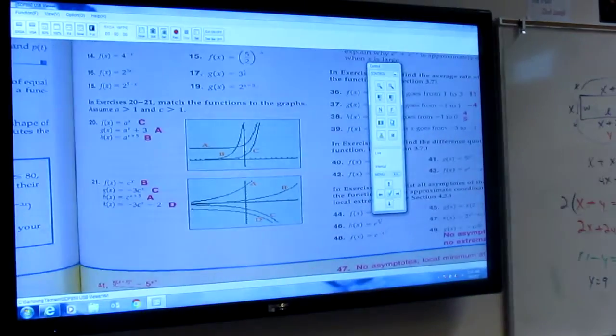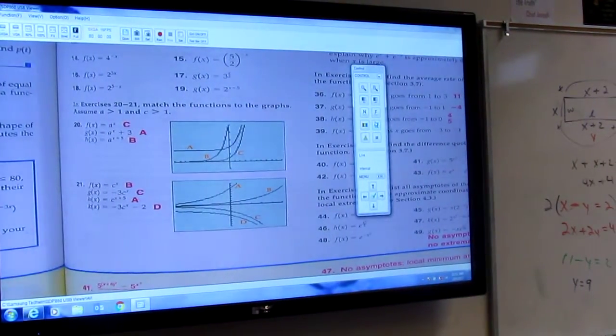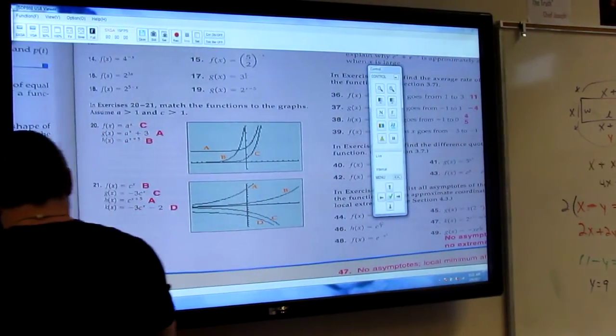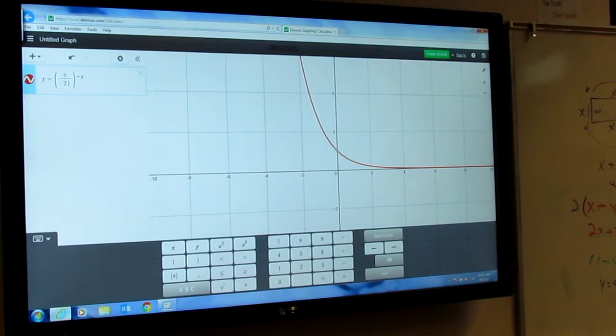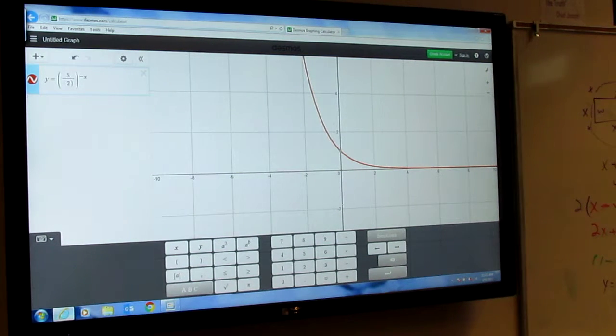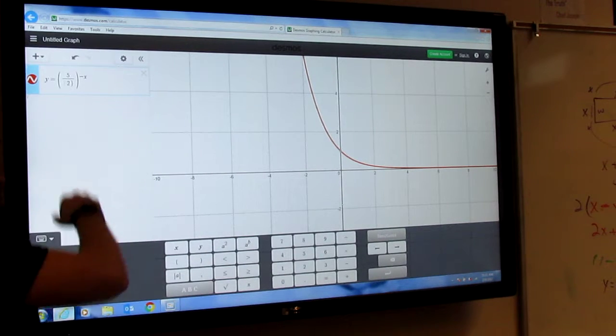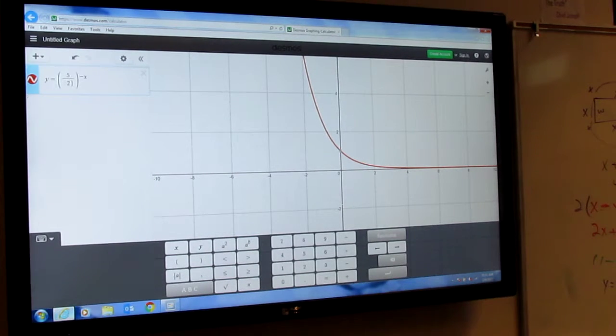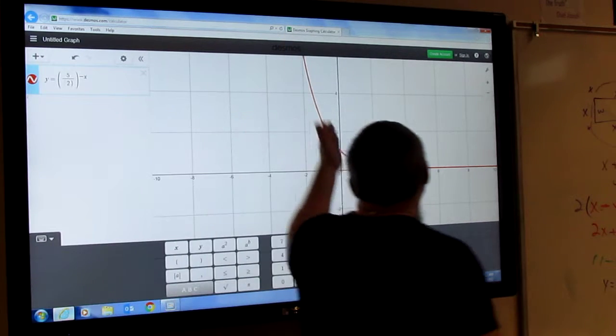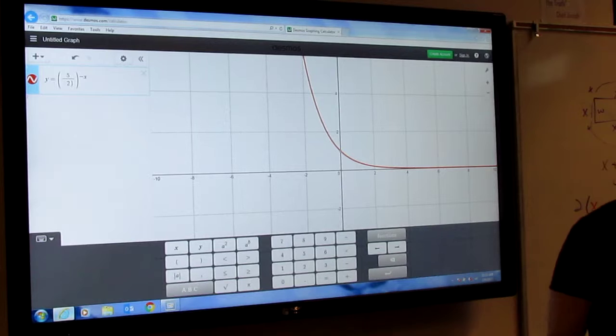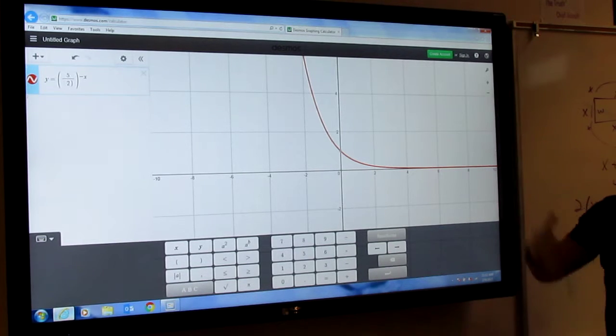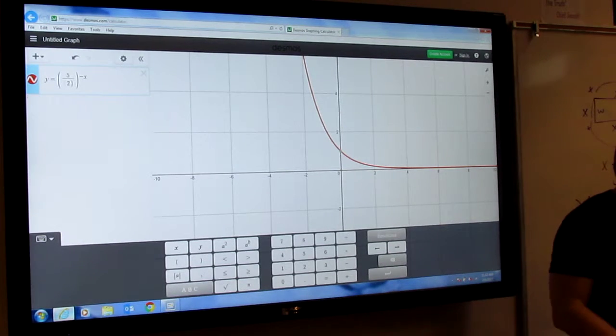So if we take a look at that on the board, we take this function and we graph it. There it is. And so what we're doing to graph it, go to the Desmos, plug in y equals 5 over 2, and then raise it to the negative x power, and here it is, a nice graph.